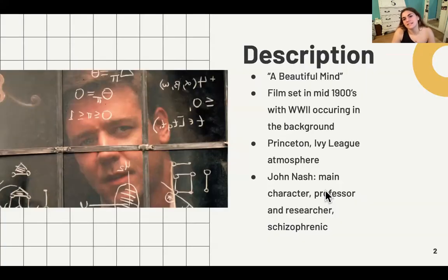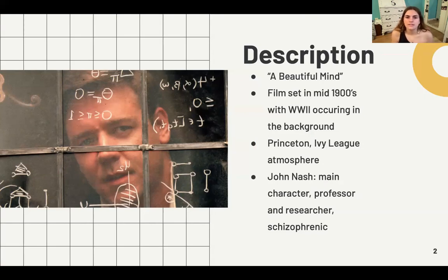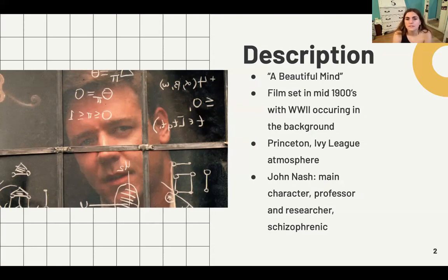A Beautiful Mind is a film set in the mid-1900s, about 1950 to 1960, with themes of World War II, the after effects of it, and the Cold War as a mild theme throughout, definitely on the minds of all the characters. The context and culture is at Princeton, a very Ivy League, upper-class atmosphere. The film follows John Nash, the main character, as he is a student at Princeton, growing up to be a professor and researcher — a very accomplished academic — but also suffering with schizophrenia.